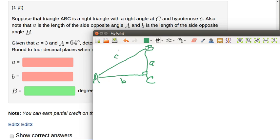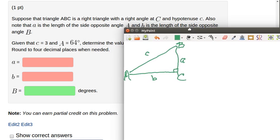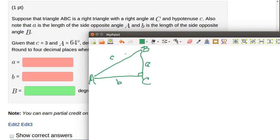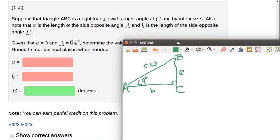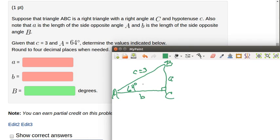Now here are the things that we're told about this particular problem: that c is equal to 3, that A is equal to 64 degrees, and that C is the right angle. So there we are, a classic solve a triangle problem. We've got three of the six measurements. We've got this side, we've got this angle, and we've got this angle.